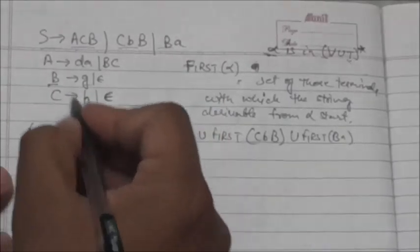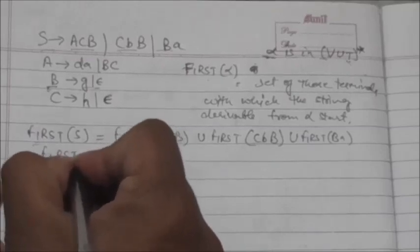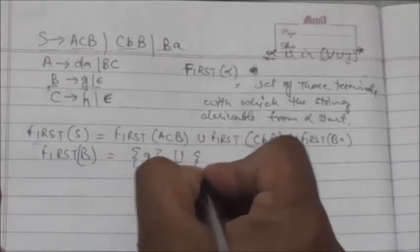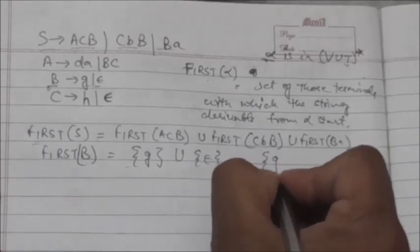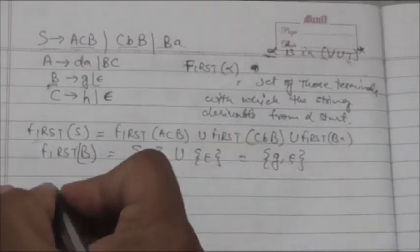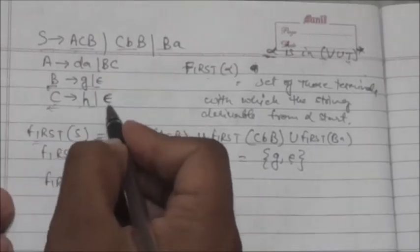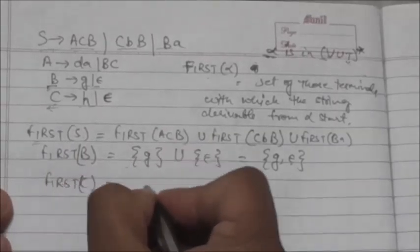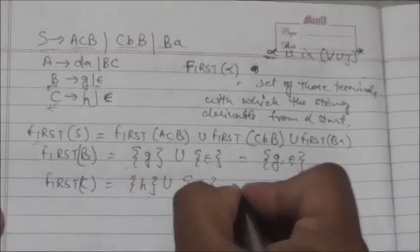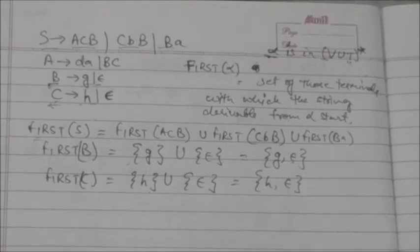What is FIRST of B? B derives g or B derives empty string, so FIRST of B is equal to {g, empty}. Similarly, what is FIRST of C? C derives h or empty string, so FIRST of C is equal to {h, empty}.